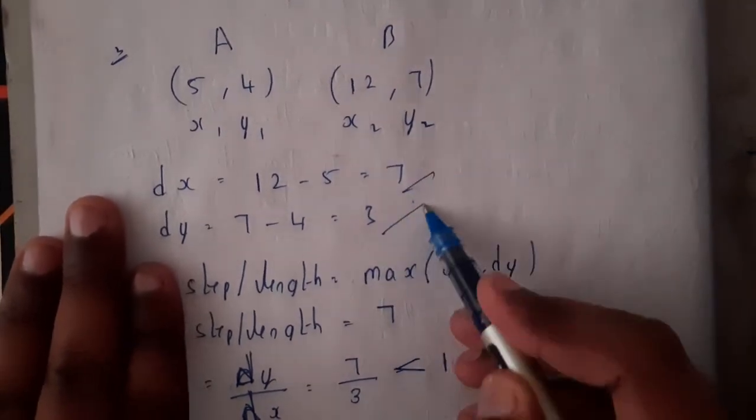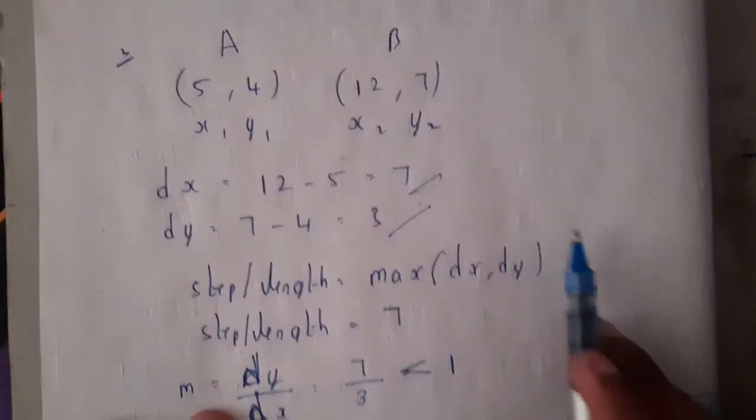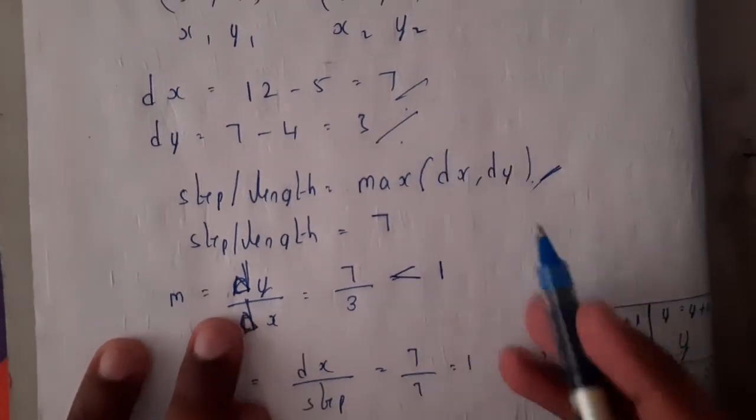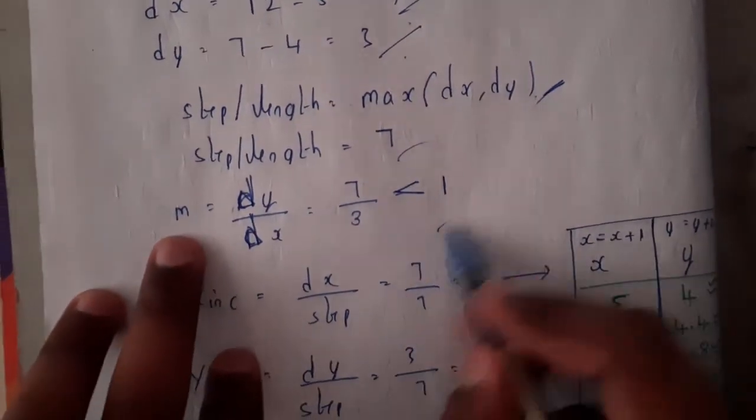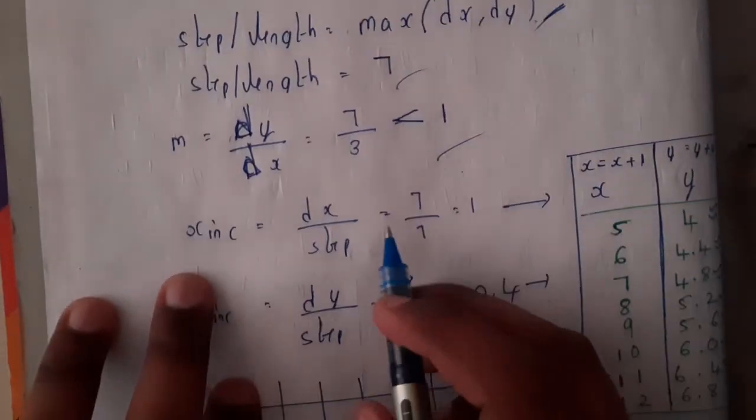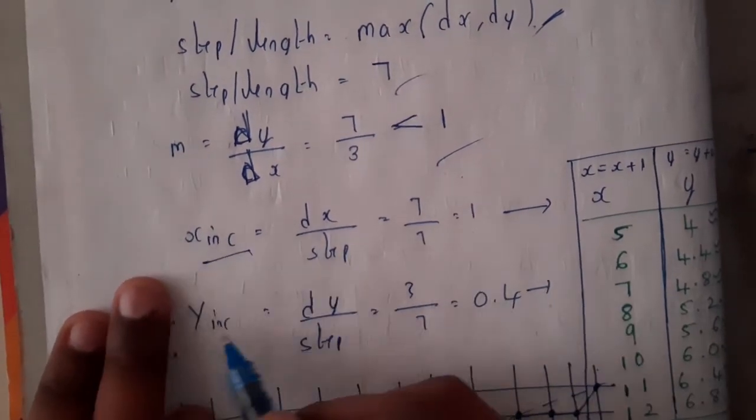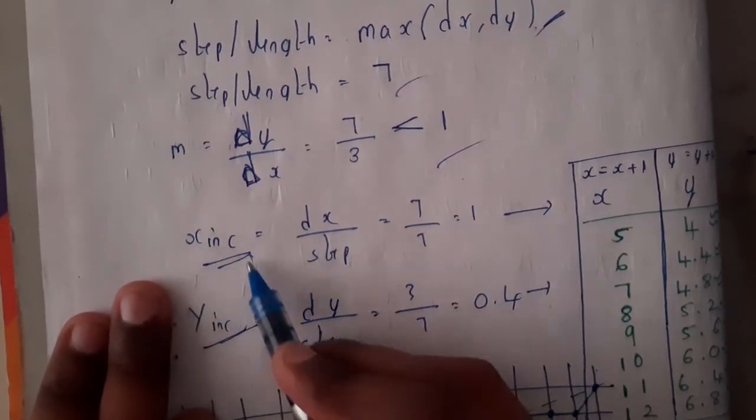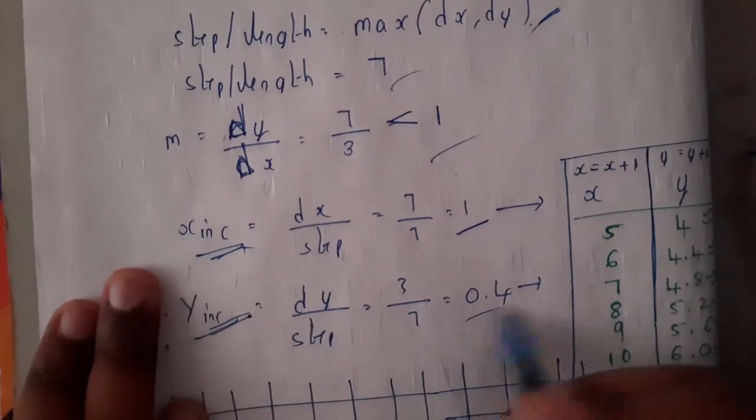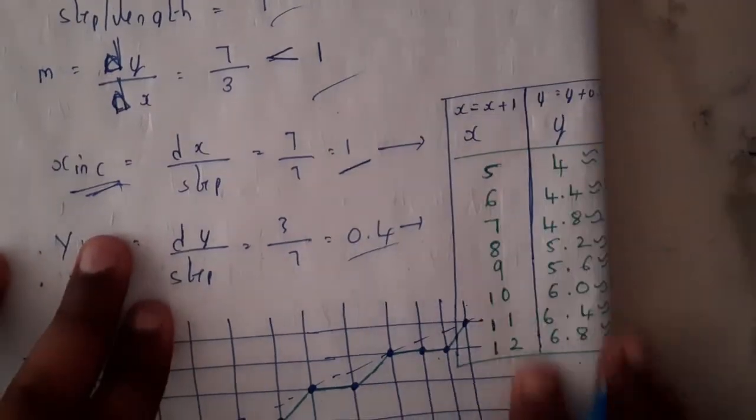We calculated dx and dy, difference between these two. We calculated the maximum out of these two, that is 3 comma 7, 7 is maximum so we got 7. We calculated slope, we got less than 1. Now we will be calculating the x increment and y increment. X increment we got 1 and y increment we got 0.4. So now you'll be incrementing along with it.